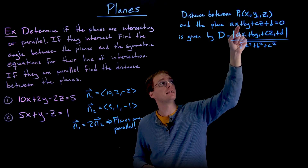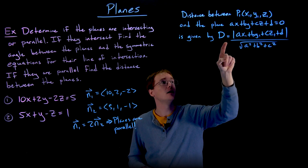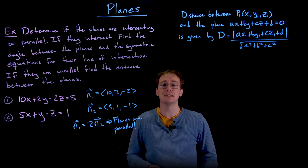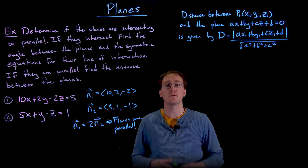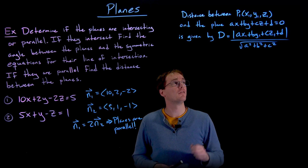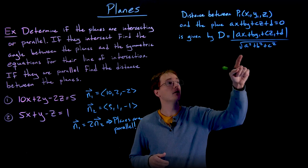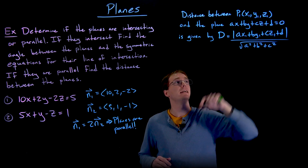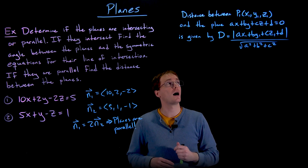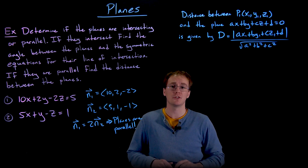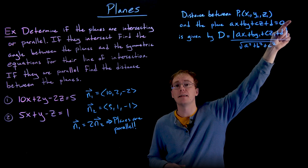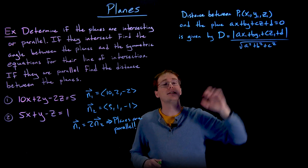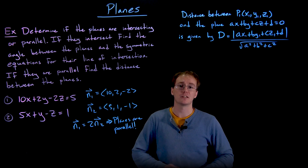This formula only works when our scalar equation is written in the form of ax plus by plus cz plus d equals zero. Often the constant will be on the other side, so we have to move that constant over to the left-hand side with all the variable terms in order to have everything set up correctly here. That's a very common mistake to make, so watch out for that.